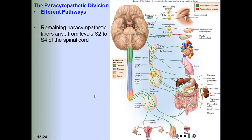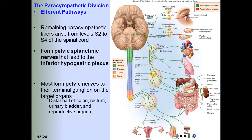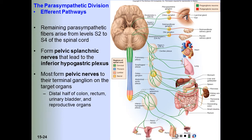The remaining parasympathetic fibers arise from spinal cord levels S2 to S4. These fibers travel a short distance in the anterior rami of the spinal nerves and then form pelvic splanchnic nerves that lead to the inferior hypogastric plexus. Some fibers synapse there, but others pass through and travel via plexus nerves to the terminal ganglia in target organs.